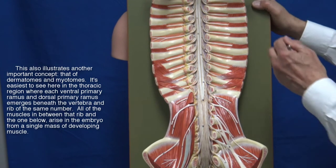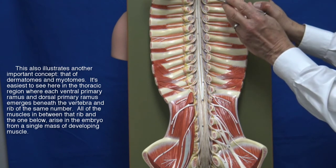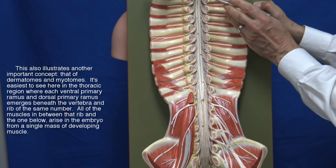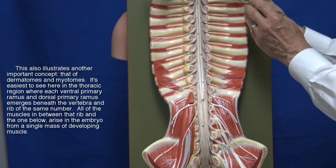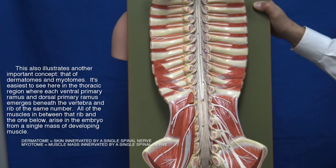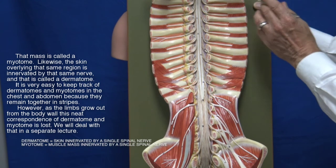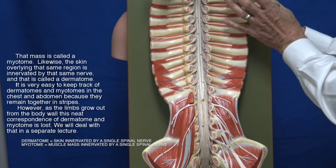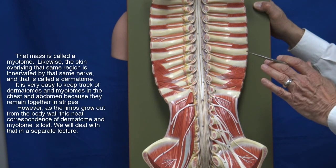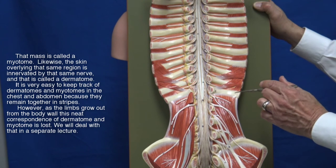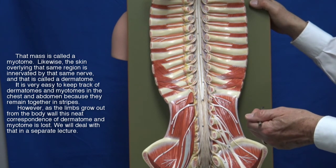This also illustrates another important concept: dermatomes and myotomes. It's easiest to see in the thoracic region, where each ventral and dorsal primary ramus emerges beneath the vertebra and rib of the same number. All of the muscles between that rib and the one below arise in the embryo from a single mass of developing muscle called a myotome. Likewise, the skin overlying that same region is innervated by that same nerve, and that region is called a dermatome. This neat correspondence of dermatome and myotome is easy to track in the chest and abdomen, but as the limbs grow out from the body, this correspondence is lost — and we will deal with that in a separate lecture.